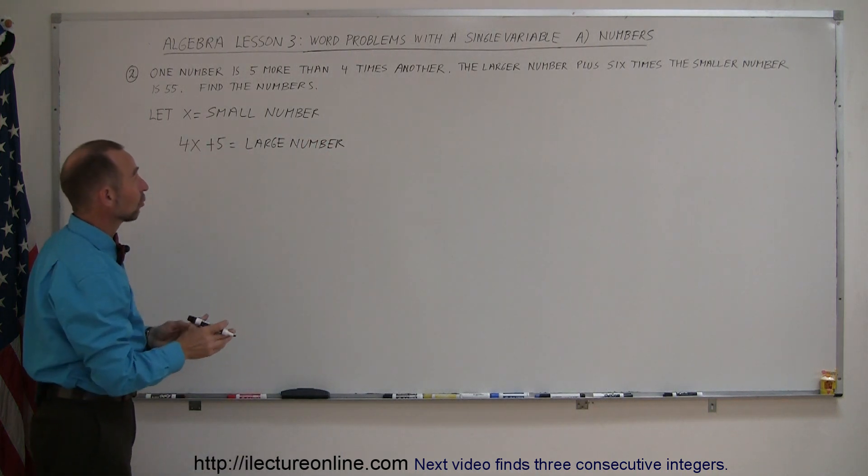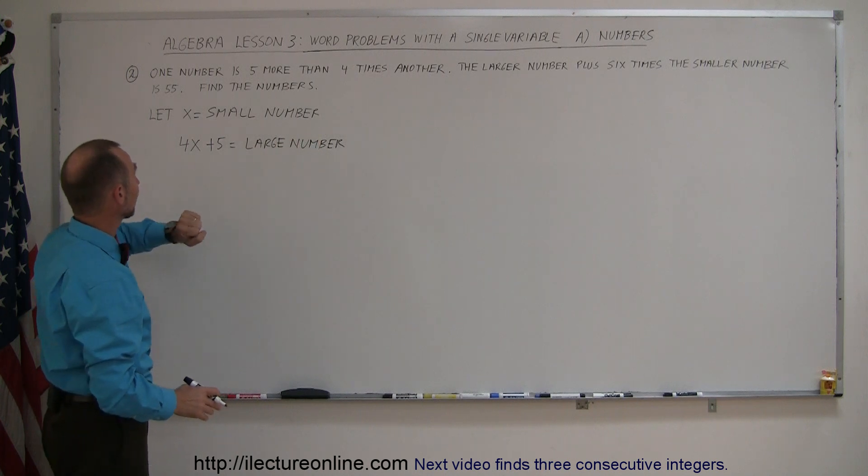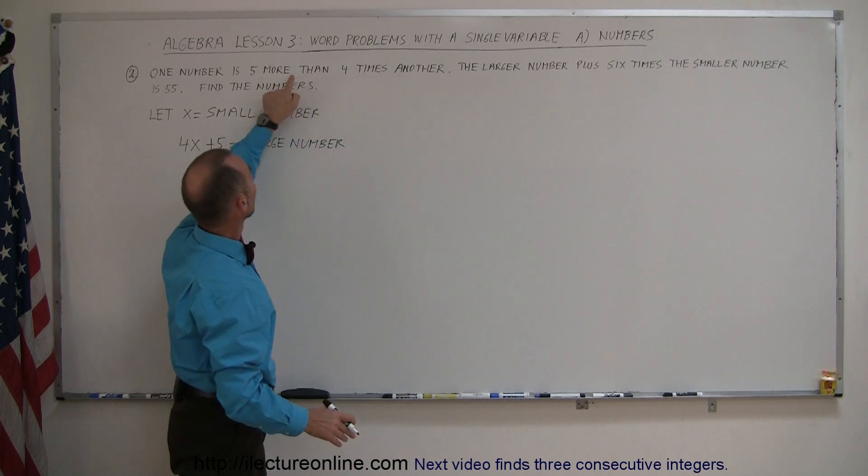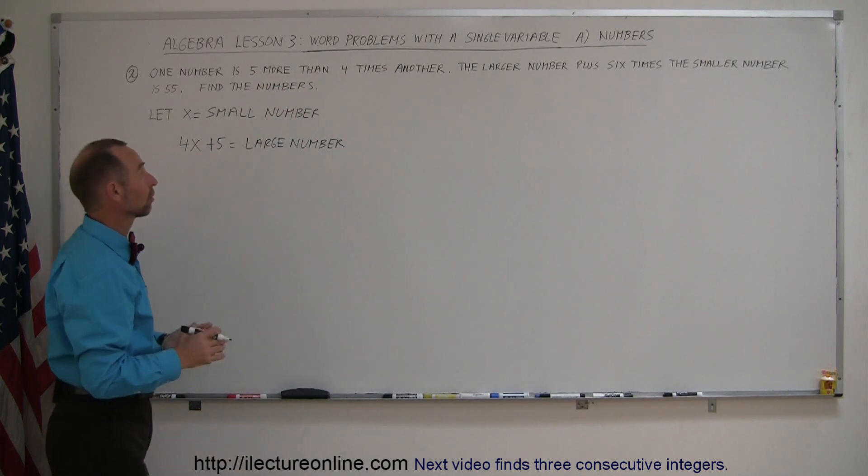Okay, so again, let x equal the small number—that's the other number they're talking about—and then the large number is four times the small number and five more. That's 4x plus 5.